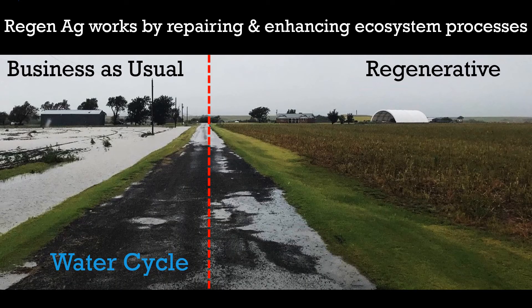When the principles are combined together in a regenerative system, it works to repair and enhance natural ecosystem processes, like the water cycle pictured here. The field on the left isn't able to absorb the rain that's falling because it has no structure, so the water washes away and carries precious soil into streams and rivers. The field on the right has been feeding the soil and keeping it covered, which has restored the soil structure and the water cycle, so the soil can absorb all of the rain and use it to grow plants. While this is a picture of the water cycle, regenerative systems also work to fix the nutrient cycle, the carbon and energy cycle, and the pest and disease cycle — these various processes that play out on farms and ultimately determine a farmer's success.